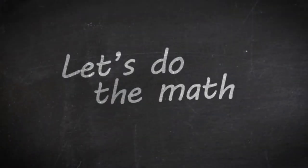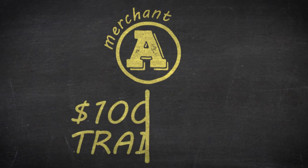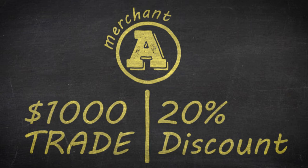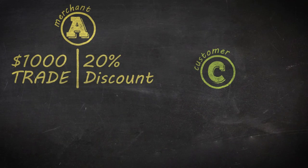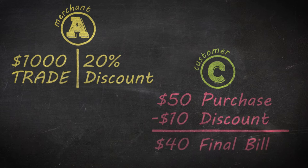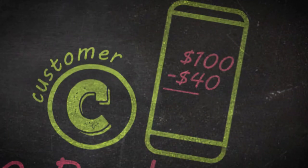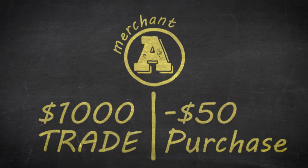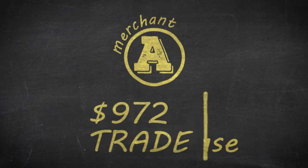Let's do the math. Merchant A commits to a $1,000 monthly trade. You offer a 20% discount at this merchant. A customer visits the merchant and spends $50, getting the 20% discount off their bill. The customer has the discounted amount removed from their app balance, while the merchant has the original amount deducted from their trade balance with you.